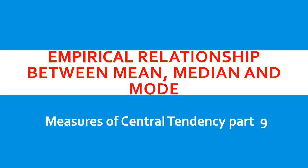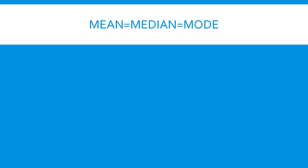Empirical جو لفظ ہے اس کا مطلب ہوتا ہے جو observe کیا گیا ہو — یعنی large number of times جو results آپ کے سامنے آئے ہوں، وہاں سے آپ generalization کرتے ہیں — اسے ہم empirical relationship کا نام دیتے ہیں۔ تو آئیے دیکھتے ہیں کہ mean، median اور mode میں کیا relationship exist کرتی ہے۔